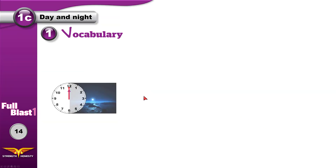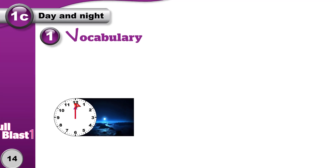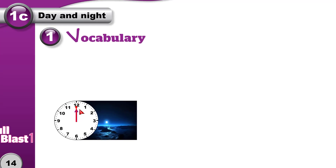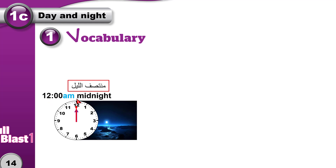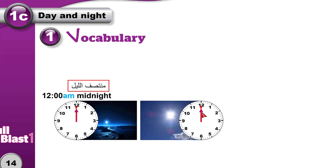If it's 12 o'clock exactly in the middle of the night, we say it's midnight. Midnight means the middle of the night, or 12 a.m. If it's 12 o'clock in the middle of the day, we say it's midday — the middle of the day — or noon. It's 12 p.m.